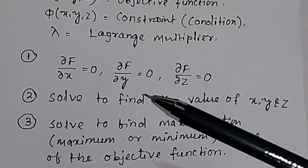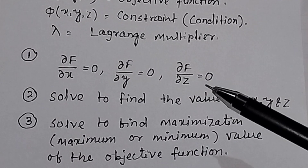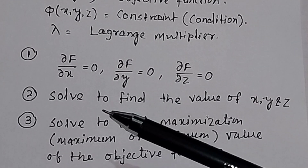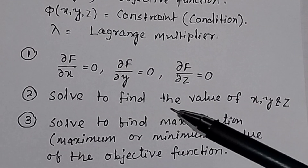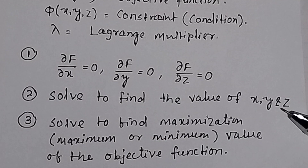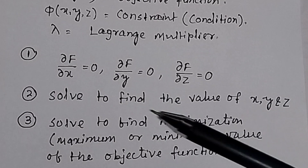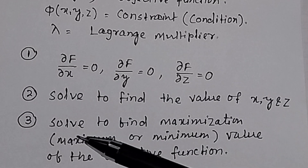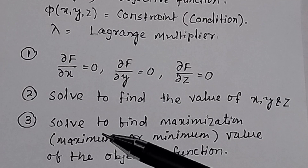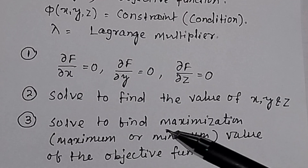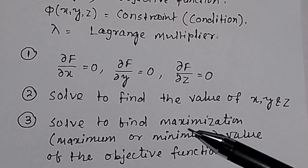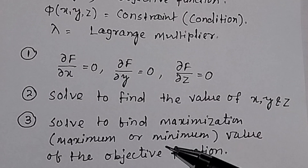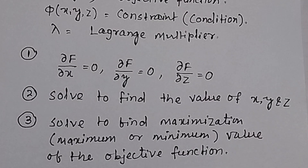After taking the partial derivatives, in Step 2 you have to solve to find the values of x, y, and z. Then in Step 3, you have to solve to find the maximization — that is, the minimum or maximum value of the objective function.